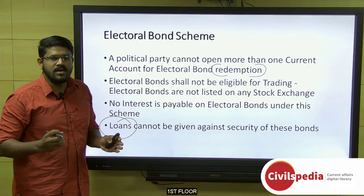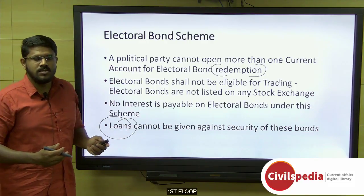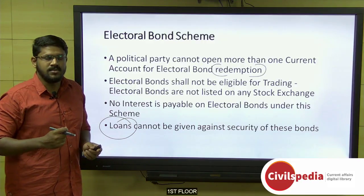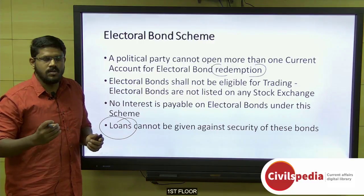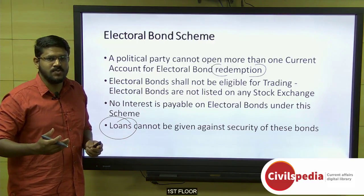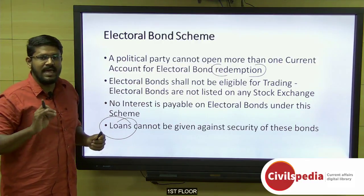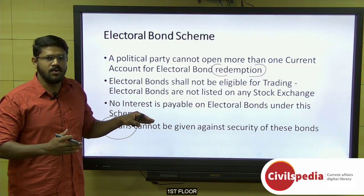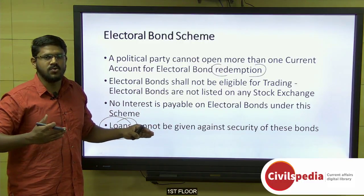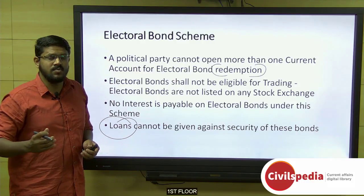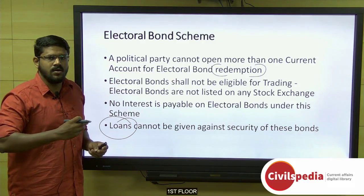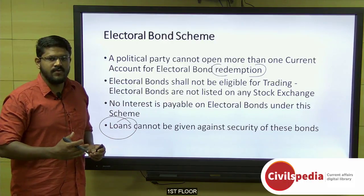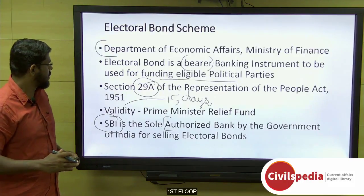One of the objectives of this scheme is to remove black money being funded to political parties. This scheme was introduced in 2018, announced in the Budget of 2017-18. However, several experts note that though it was stated to initiate transparency, the bond will not have any name on it, so one cannot say who actually funded the political party. Recent news states that more than 95% of funds through electoral bonds went to only one political party in the country, and there were several criticisms related to this Electoral Bond Scheme of 2018.